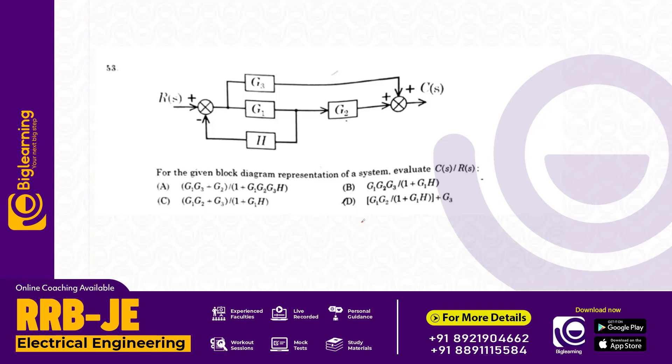For the given block diagram representing the system, simplify to find C of s by R of s. The answer is C.